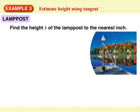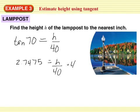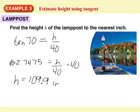Let's try this next one. I'm going to do tangent of 70 degrees equals opposite over adjacent. I type tan 70 in my calculator and get 2.7475. Multiply both sides by 40, and the height equals approximately 109.9 inches.